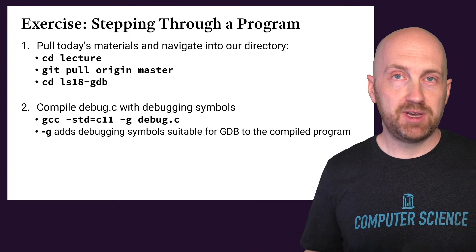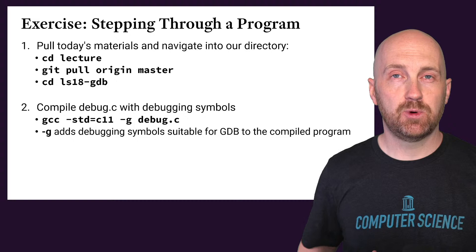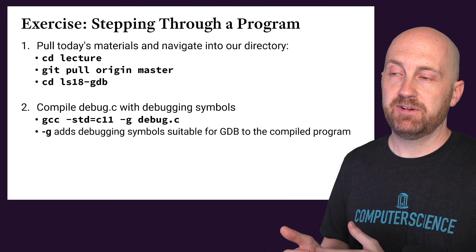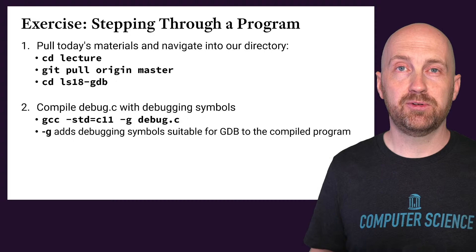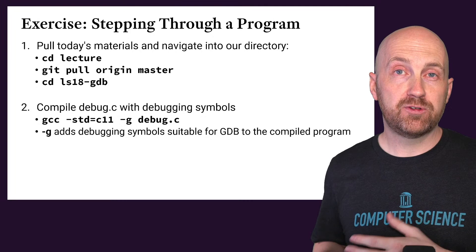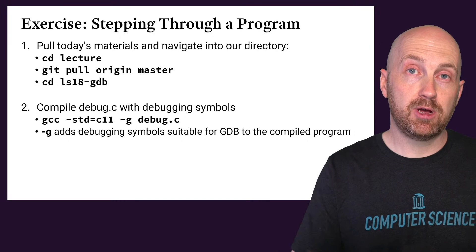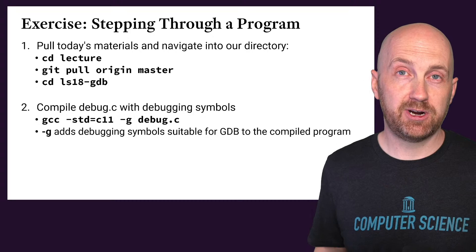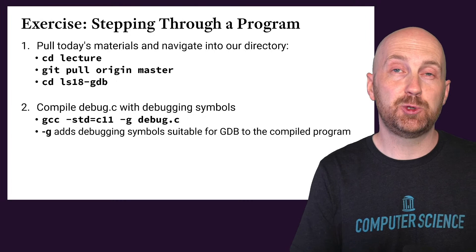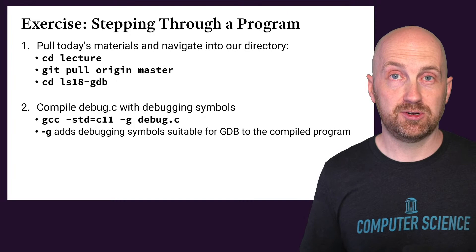The GCC compiler has many different options. One we've been using is the -g option, which means "compile this program with debugging symbols" — where symbols are things like the names of our functions and variables. By default, if you compile a program without debugging symbols, all of that naming information is lost. Your variable names only mattered to produce the program; the machine doesn't care what you named your variables or functions.